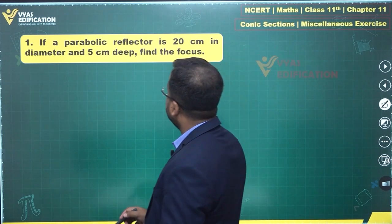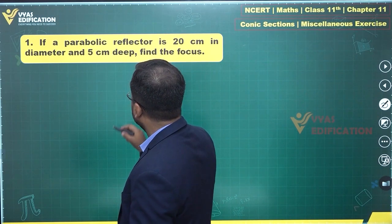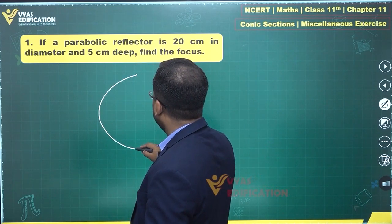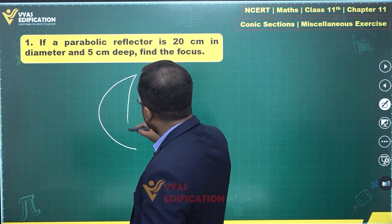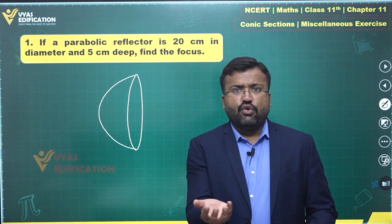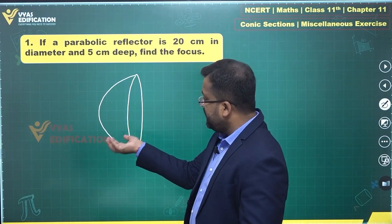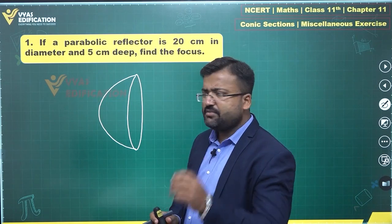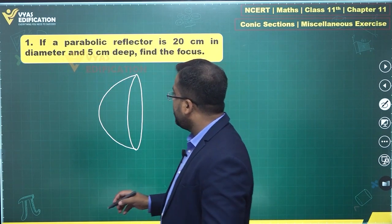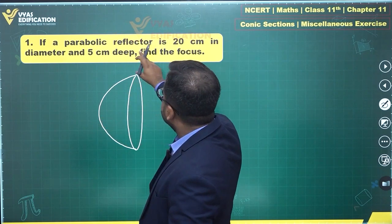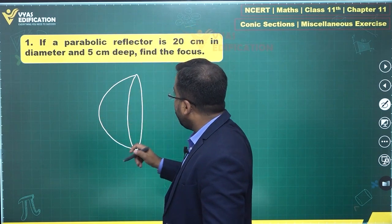So, we have a parabolic reflector. Let's draw a parabolic reflector, parabolic shape and a reflector will be basically this kind of a shape. This will look like a bowl. If you see, by placing it over here, this will look like a bowl but reflector generally is kept horizontal, in this particular position, vertical position and in this case, this 20 centimeter in diameter.